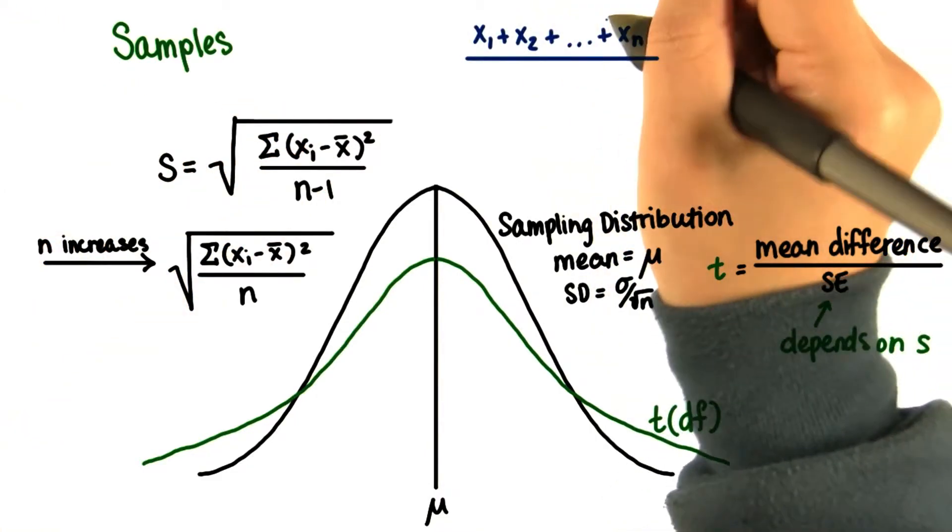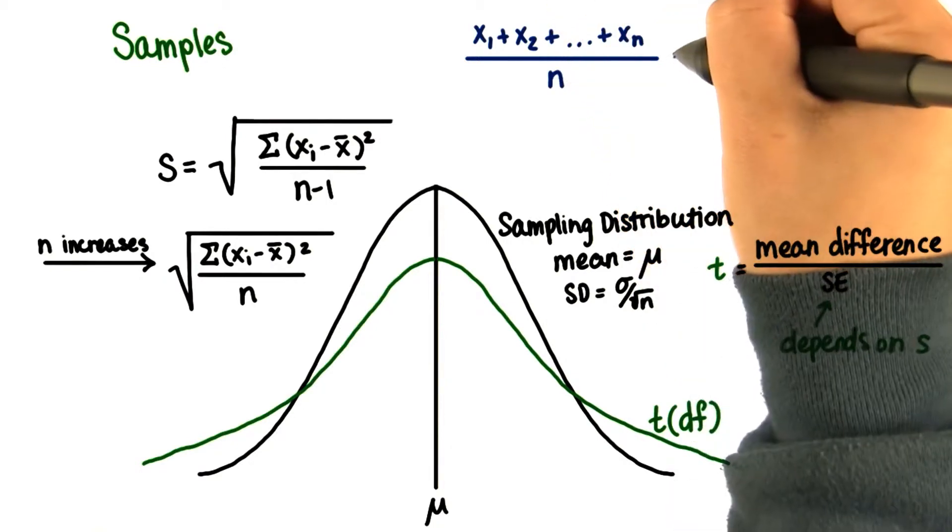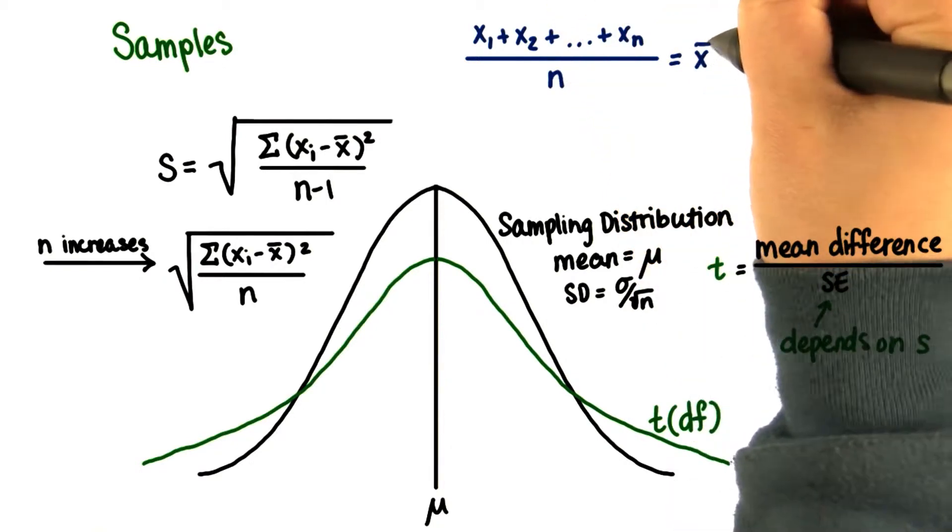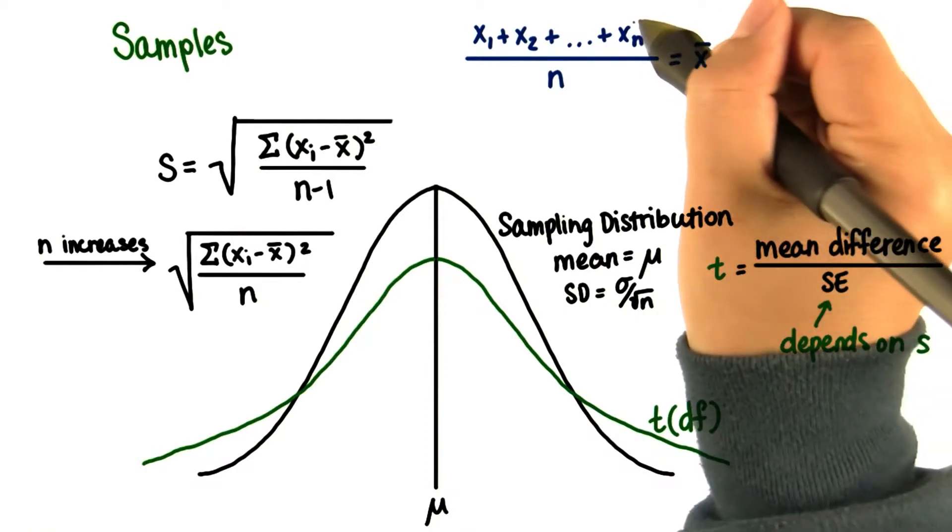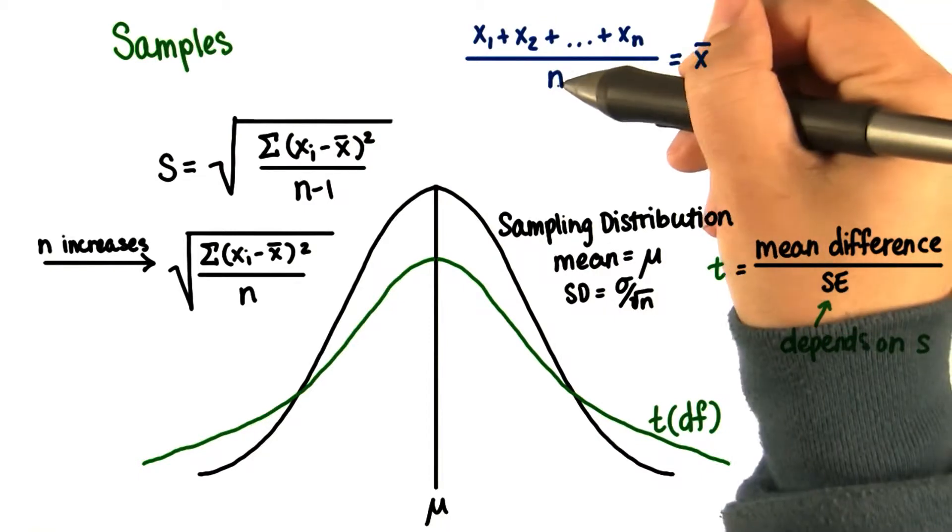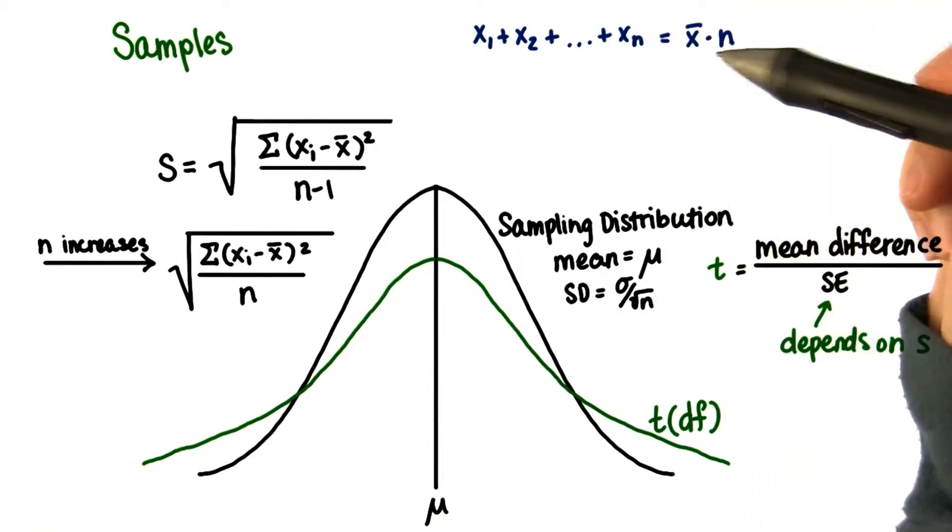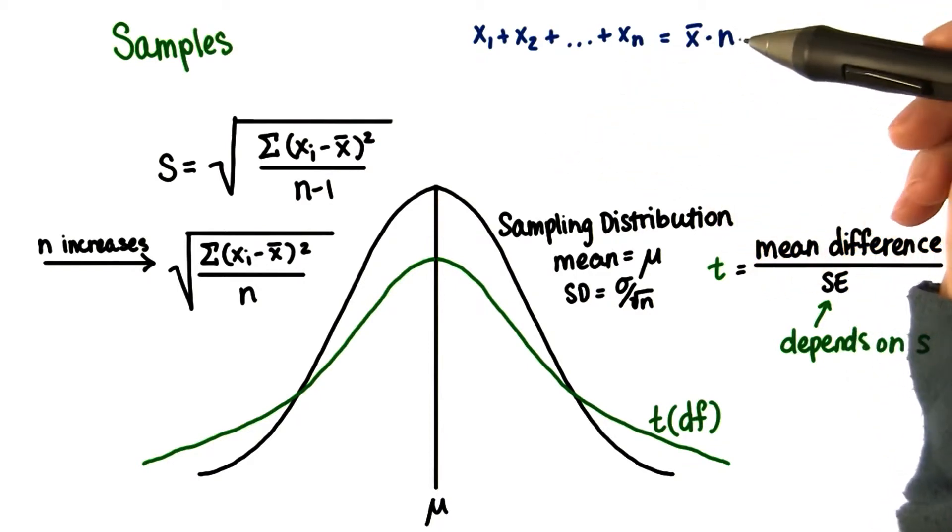To find the mean, we add up each value in our sample, divide by the number in our sample, and then we get x bar. That means that the sum of all the values in the sample has to be x bar times n. This is just like that example you did before,